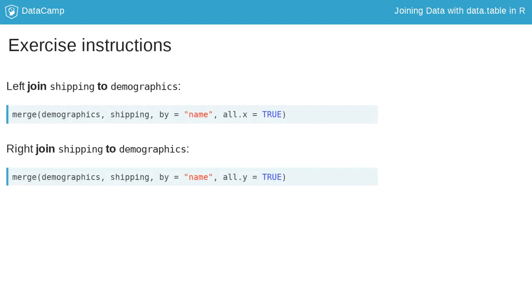In the code exercises throughout the rest of the course, you will be instructed to join one data table to another using the wording you see on the slide. Regardless of the type of join, the data table that you see after the word to should always be placed on the left side of the join in your code.